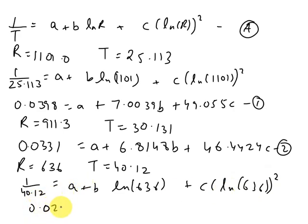So this turns out to be 0.0249 equals A plus 6.4551B plus 41.6695C. And let us take this as equation 3.